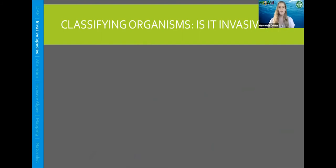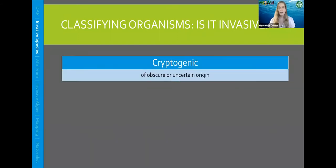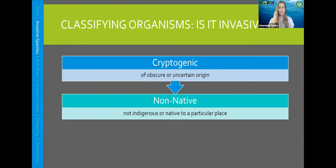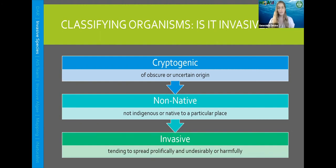Let's first talk about what classifies an organism as invasive. There are a couple of terms we hear when talking about invasives. The first is cryptogenic — this means we're uncertain of where a species' origin is. If we take it one step further and classify things as non-native, this is when we know that a species is not from Hawaii and originally located somewhere else. Further classifying it as invasive means it's causing harm to the aquatic environment — it's not where it's supposed to be, and it's causing harm.